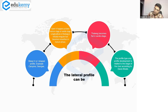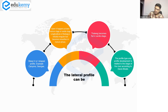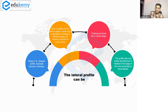The thalweg almost becomes flat in the senile stage. While discussing this, you can bring in the Davis model, but not in too much detail — keep it to three to five lines. The profile type and profile development is related to the stage of the river according to the Davis model.